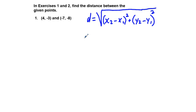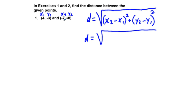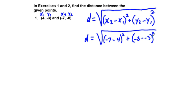It's really a version of the Pythagorean theorem. If we call this first coordinate pair x₁, y₁ and our second coordinate pair x₂, y₂, we can use this formula. We take x₂ which is negative 7 and subtract x₁ which is 4, and square that; plus we take y₂ which is negative 8 and subtract y₁ which is negative 3, and square that.